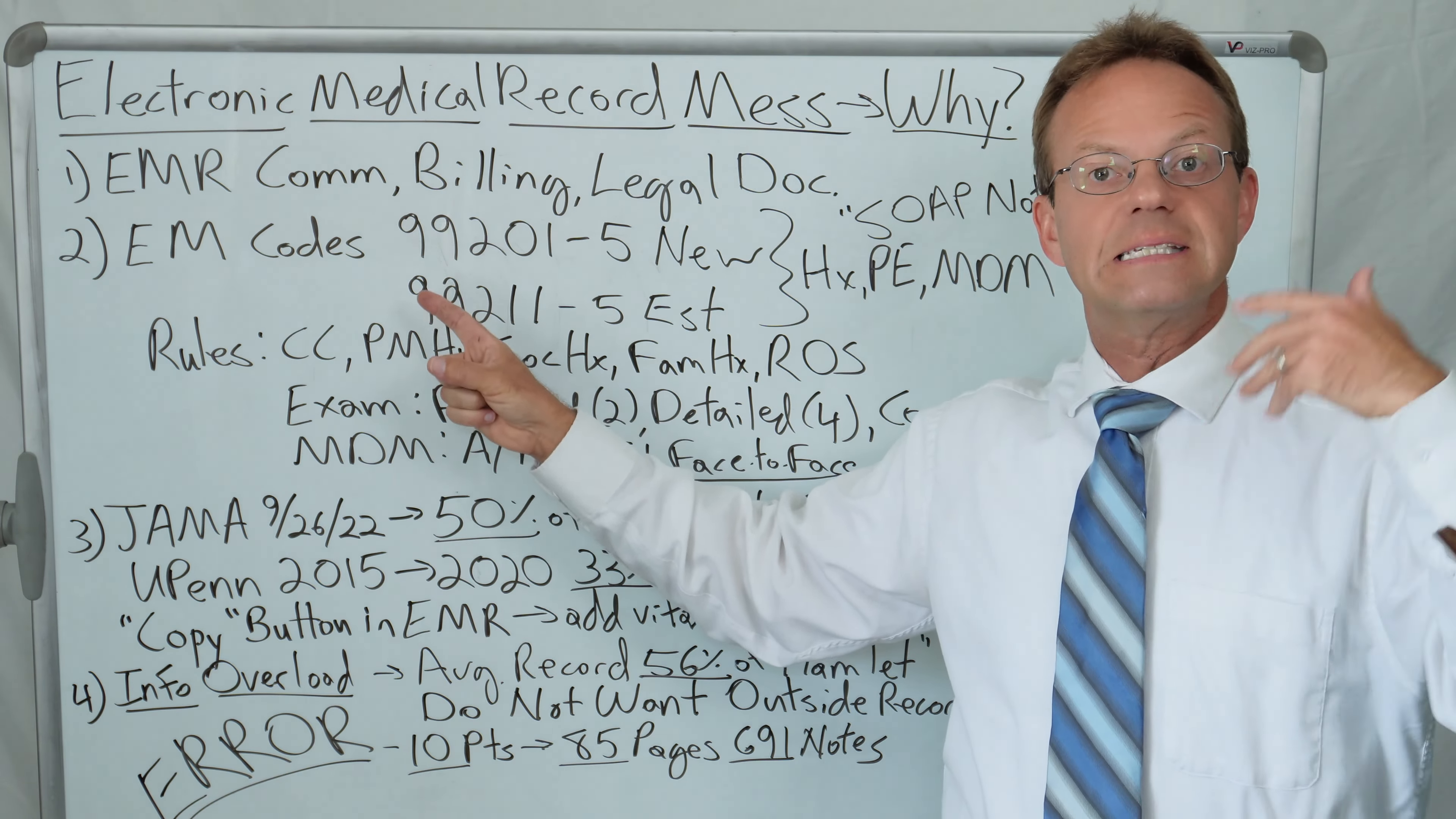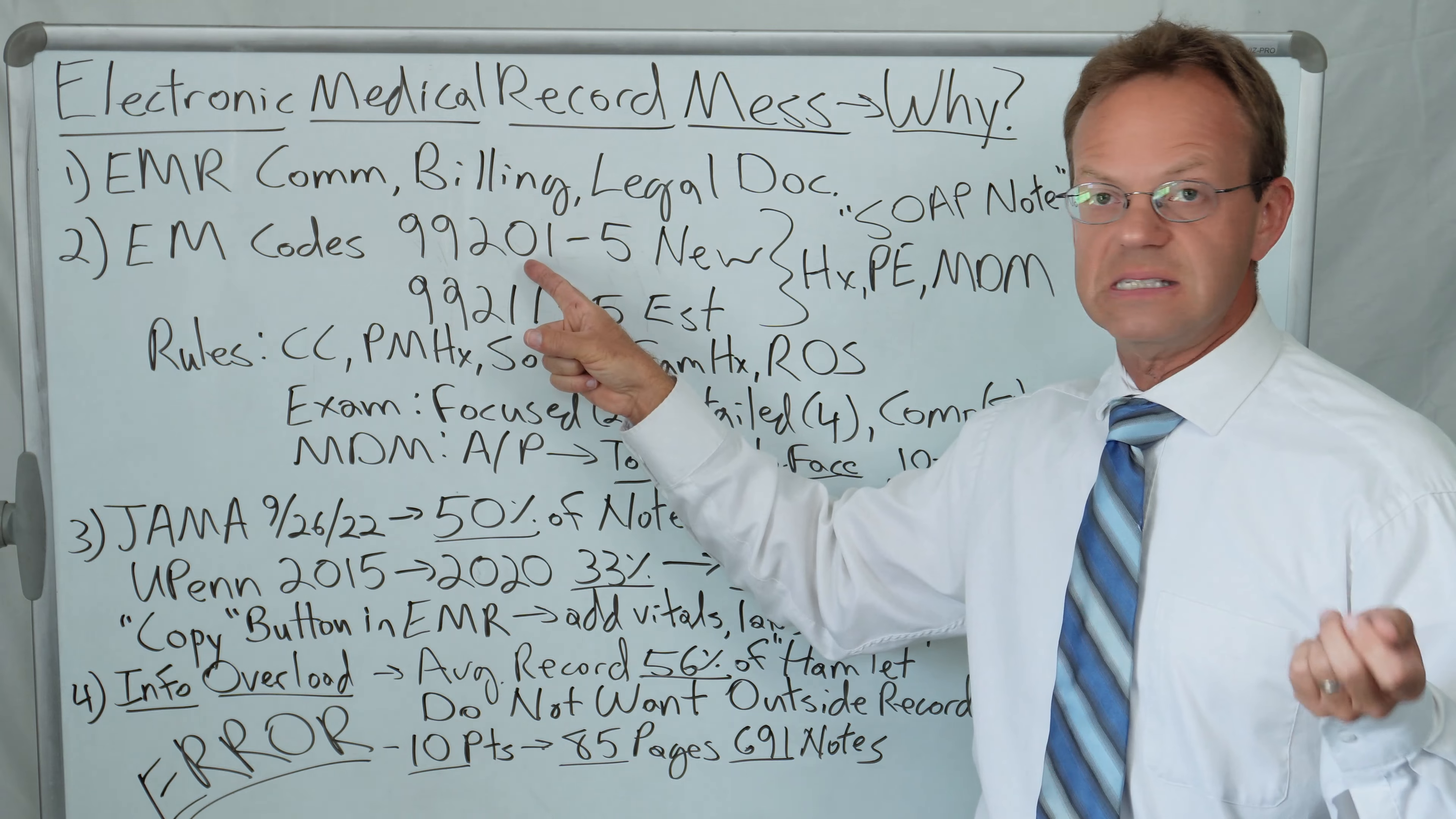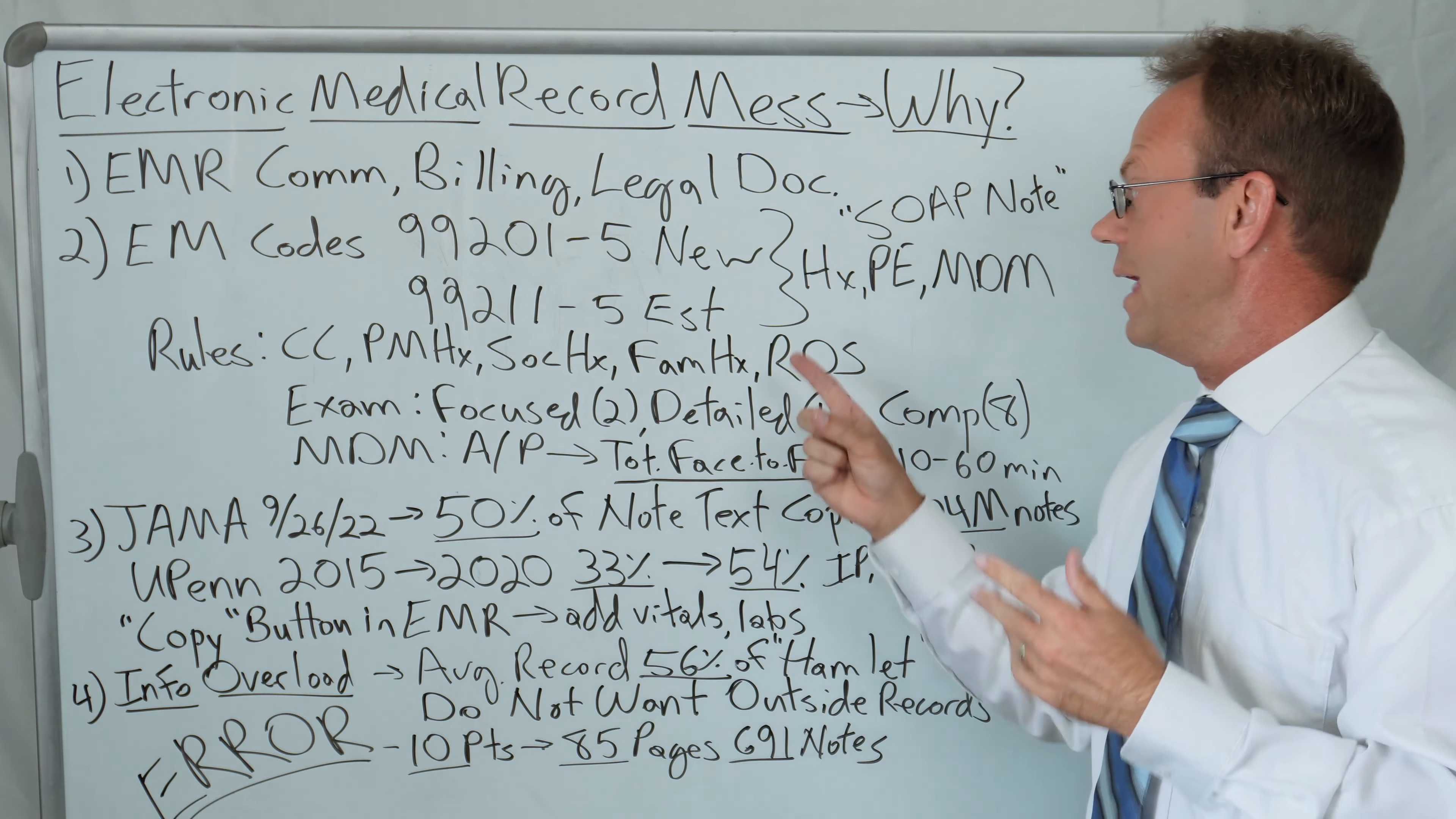For an established patient, so you go and you see the doctor but then you've got to come back in a couple of weeks for a follow-up appointment, they use a different set of codes. It's 99211, so instead of it being a 0, it's a 1 as the second to last digit. And again, it's 1 through 5 as the last digits, depending upon the level of complexity.